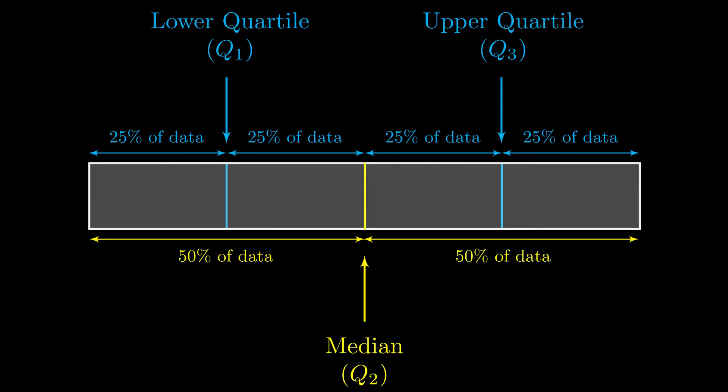But what we can do is, instead of using the range, which is quite crude and quite vulnerable to that, we can measure the difference between these two quartiles, and we call this the interquartile range. So that's a better measure of spread. It's less susceptible to those outliers. So we might sometimes ask for this one now, this difference between the upper and lower quartile.